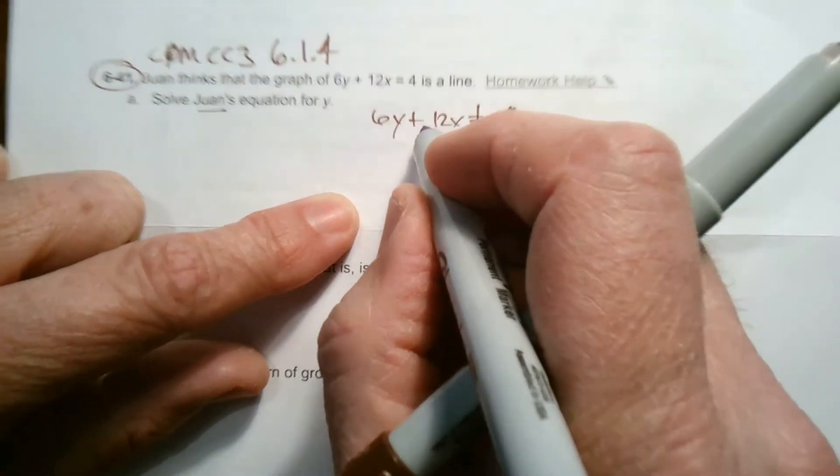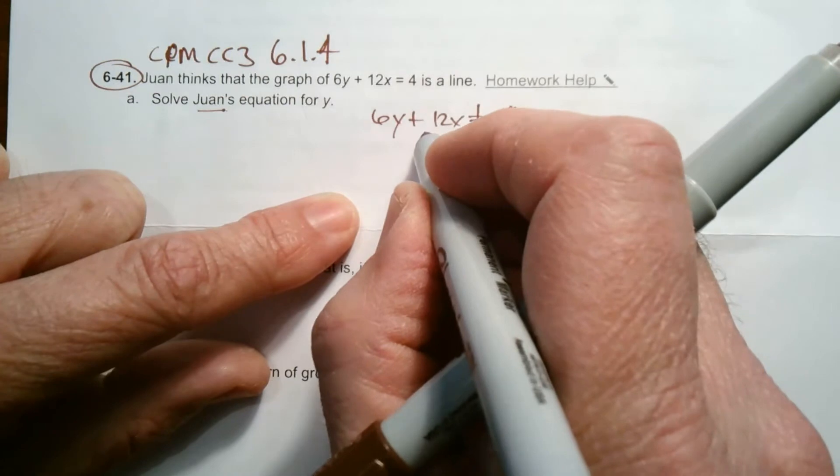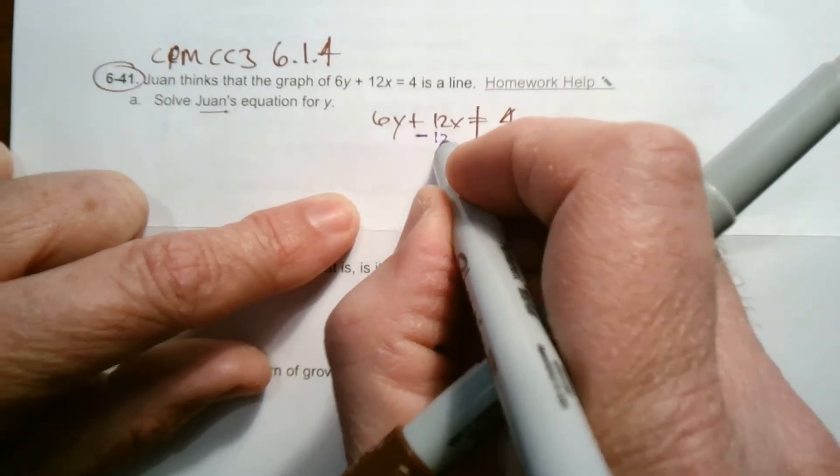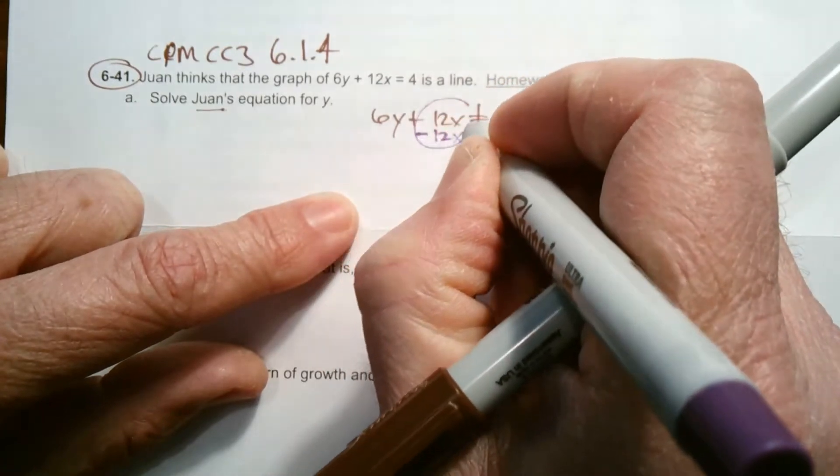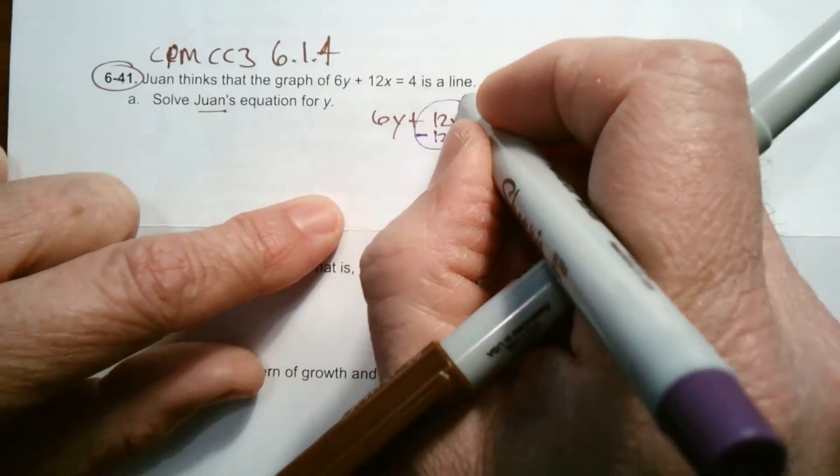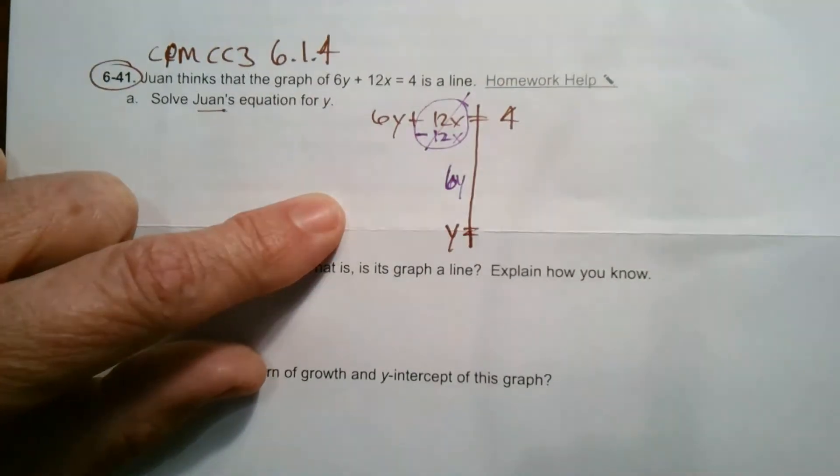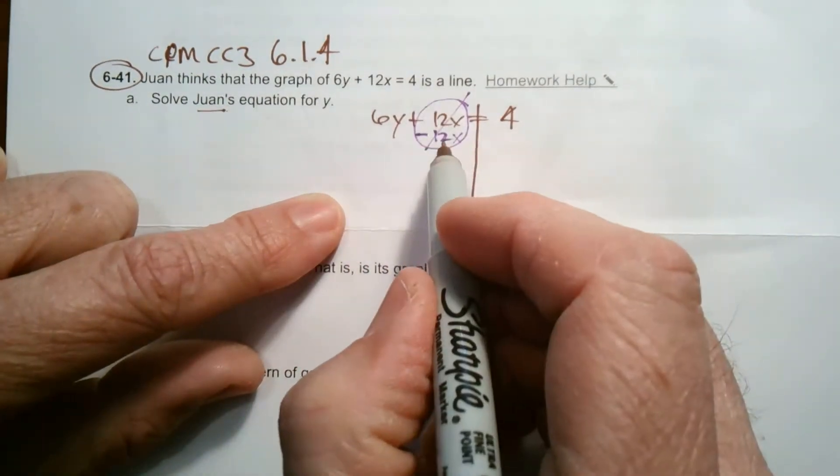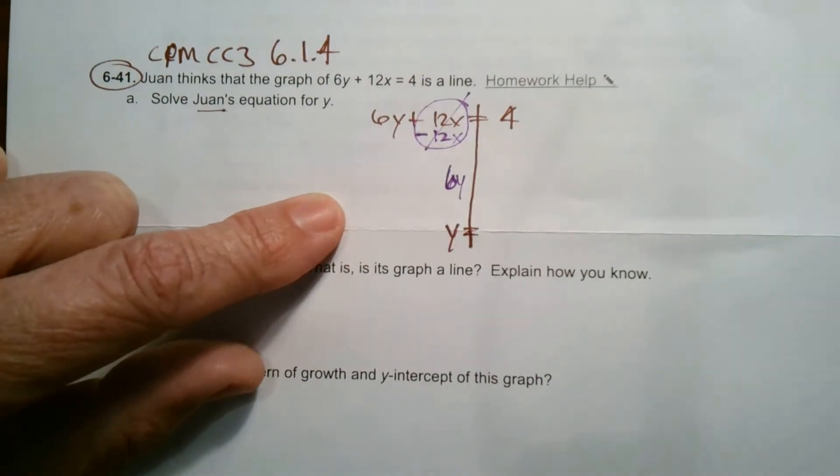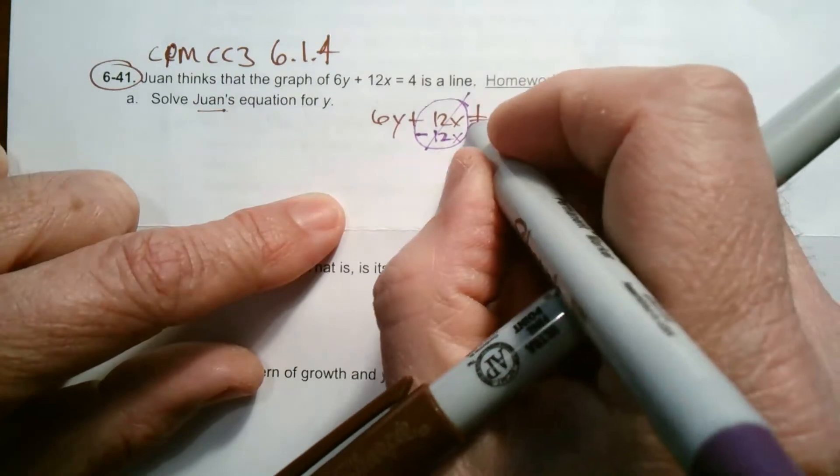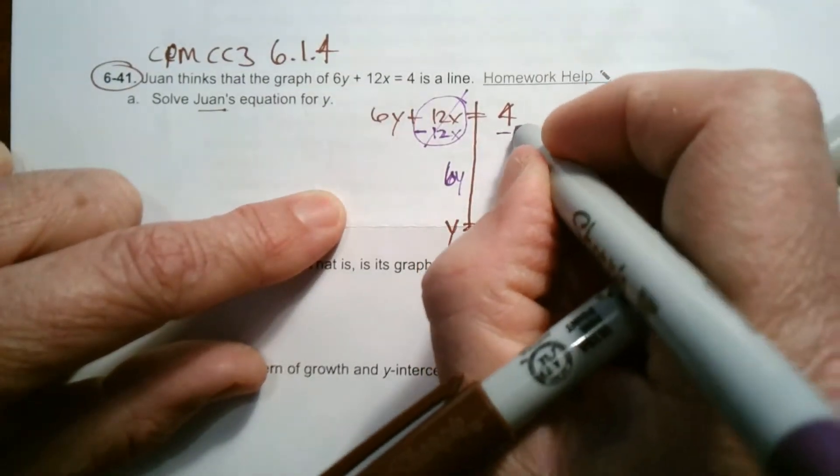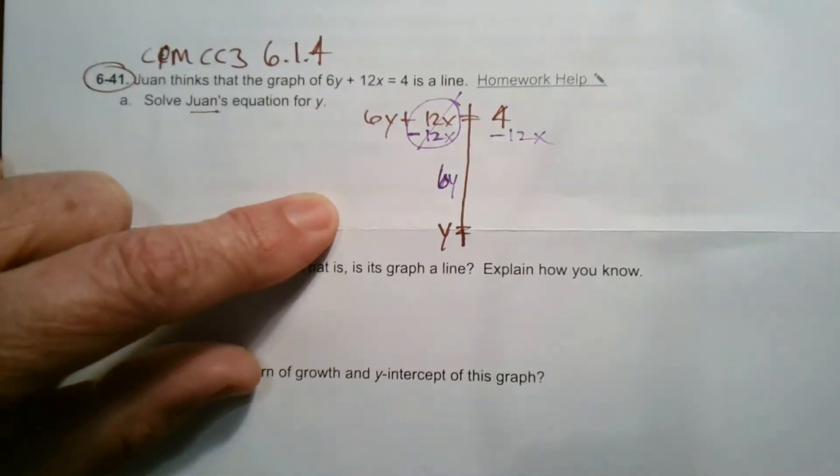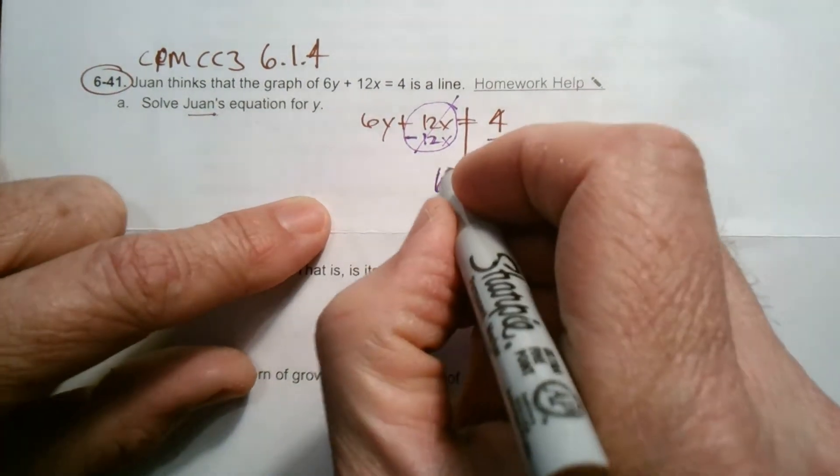The opposite of plus 12x is minus 12x. The inverse operation is minus 12x. You're trying to make this go away with operations. So positive 12x, negative 12x, that goes away. But to legally do it, you do what you do to one side of the equation, that's why I draw this line to show the two sides, you do to the other side. So on this side as well, I've got to do minus 12x.